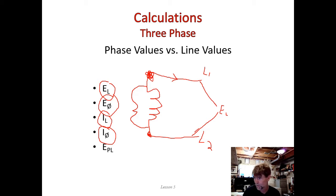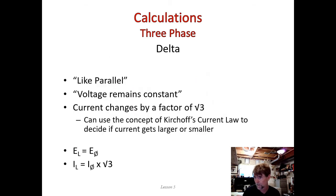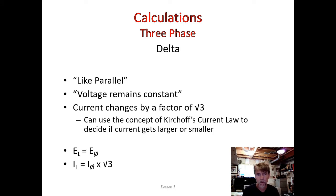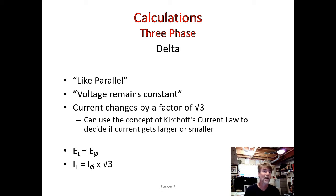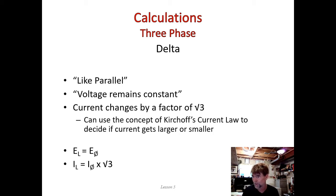Let's go back and talk about a delta connection. We said a delta connection is like parallel. What do we base our calculations on in a parallel circuit? The thing we hang our hat on is that in a parallel circuit, voltages remain constant. If we go back to our original lessons on Ohm's law, every branch of a parallel circuit sees the same voltage drop.